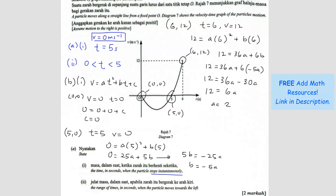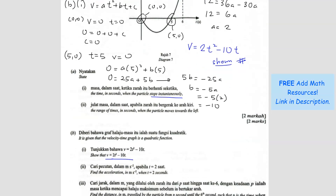Substituting B = −5A into the third equation: 12 = 36A + 6(−5A) = 36A − 30A = 6A. So A equals 2. Then B = −5 × 2 = −10. Our velocity equation is therefore V = 2t² − 10t, with C = 0. This matches what the question asked us to show.